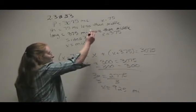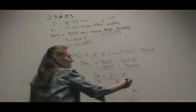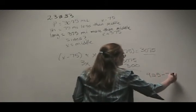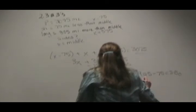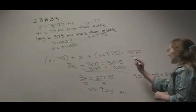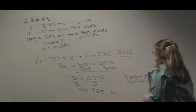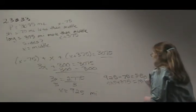So x minus 75 for the shortest side, so 925 minus 75, 850. Then over here, we have 925 plus 375, so 1,300.